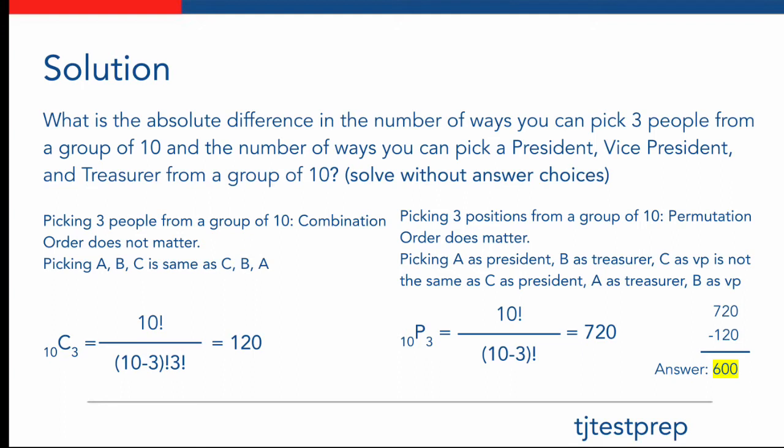Now using the formulas for combinations and permutations, we can solve the following problem. For the first half, the combination, we get 10 factorial over (10 minus 3) factorial times 3 factorial, which gives us an answer of 120. For the permutation, or the second half of the problem, we get 10 factorial over (10 minus 3) factorial, which leaves us with an answer of 720.